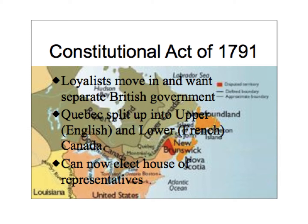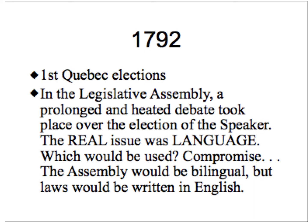This resulted in Great Britain splitting Quebec up into Upper and Lower Canada, the two colonies, which could now elect a House of Representatives. In 1792, Quebec held its very first election. The Legislative Assembly had a long debate over who should be the speaker.